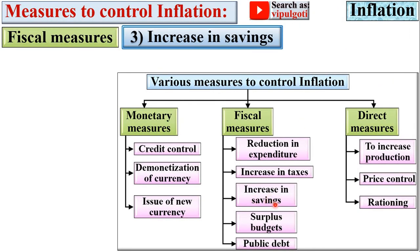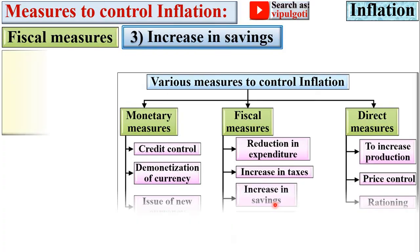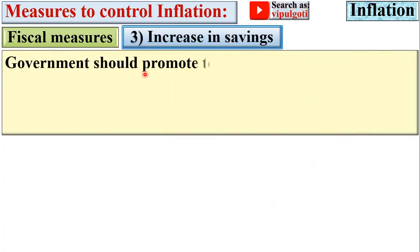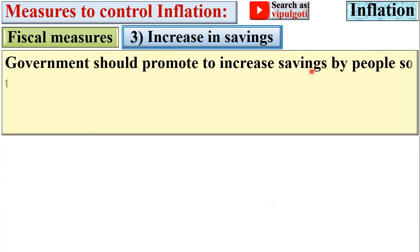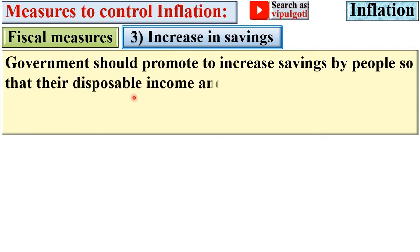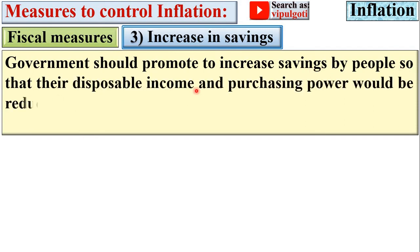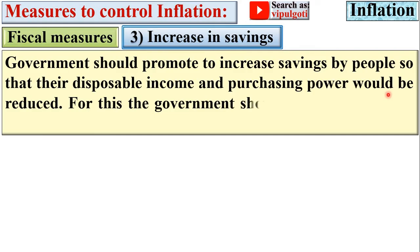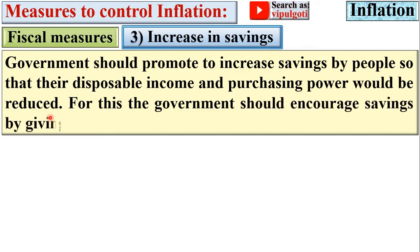Next: increase in savings. The government should promote savings by people so that their disposable income and purchasing power would be reduced. For this, the government should encourage savings by providing various incentives.